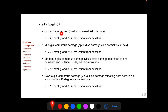In patients with ocular hypertension in whom there is no disc or visual field damage but who have significant risk of developing glaucoma, the IOP needs to be reduced by 20% from the baseline and should be less than 25 mmHg. In patients with mild glaucomatous damage, defined as presence of optic disc changes but without visual field defects, the IOP has to be reduced by 25% from baseline and should be less than 21 mmHg.